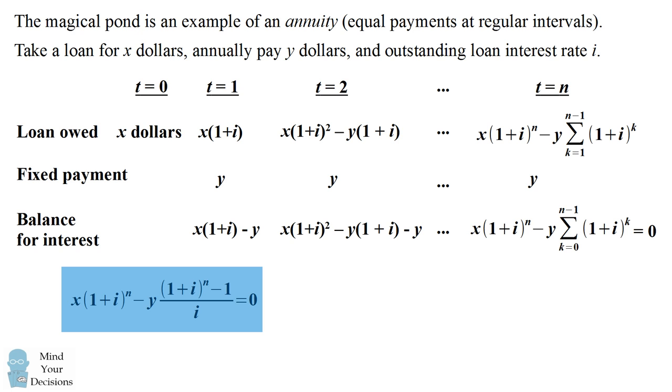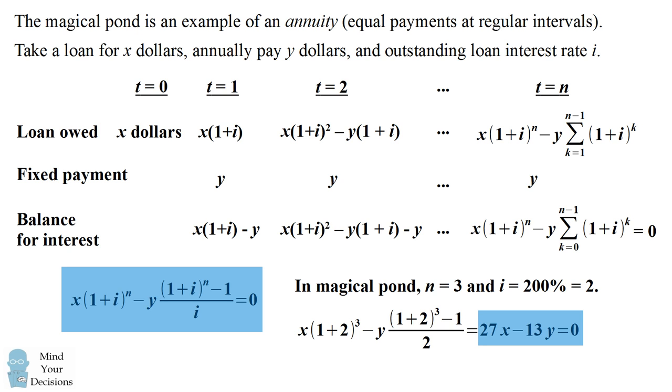In the magical pond, we started out, we had three different temples, so we had three different periods, and between each temple we had to swim in the pond, and the number of flowers we had tripled, which is an interest rate of 200%. We can substitute these values into our annuity formula, and notice we end up with exactly the same equation of 27x minus 13y equals zero. This is an alternate way of solving the problem, and it's a way to see how this problem relates to financial products.